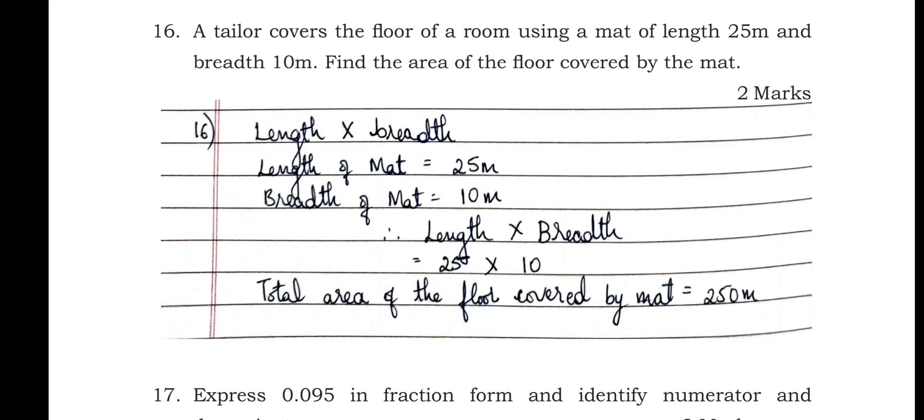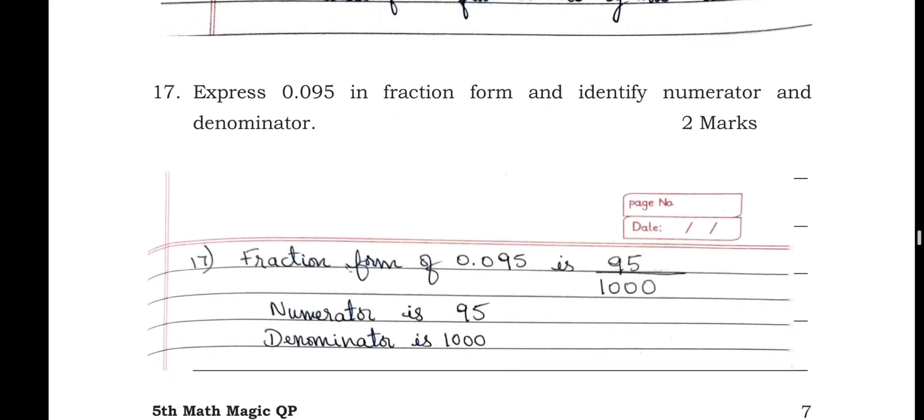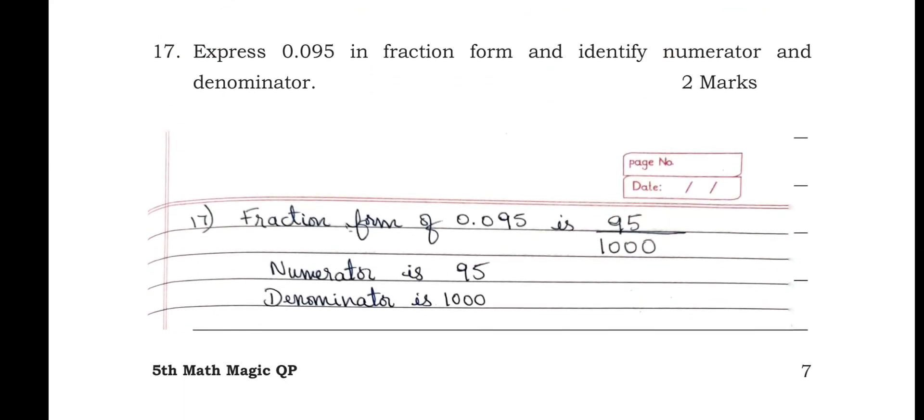The tailor covers the floor of a room using a mat of length 25 meters and breadth 10 meters. Find the area of the floor covered by the mat. Using length × breadth: 25 × 10 = 250 square meters. The total area of the floor covered by the mat is 250 square meters.